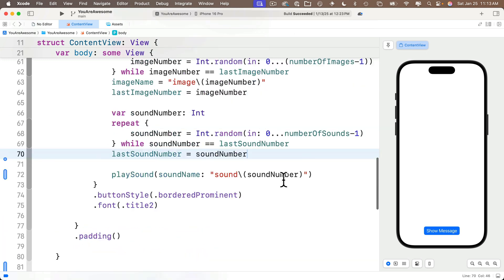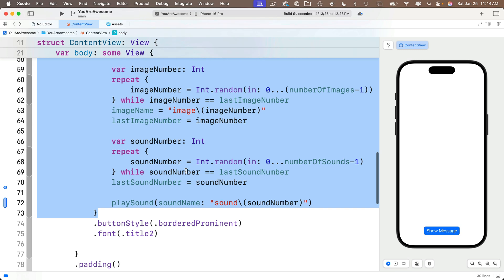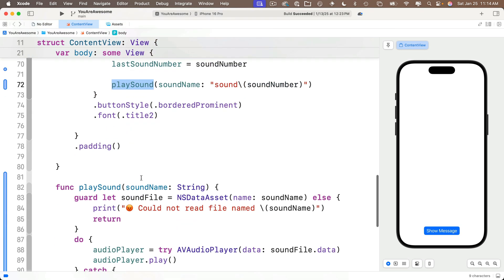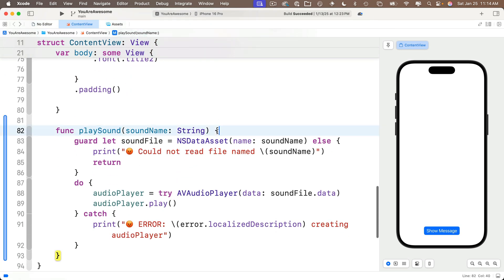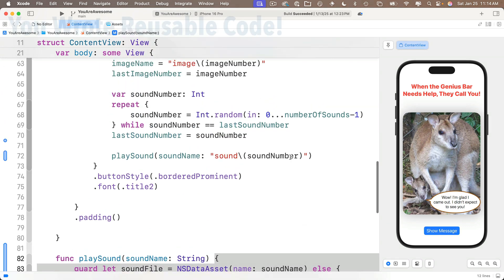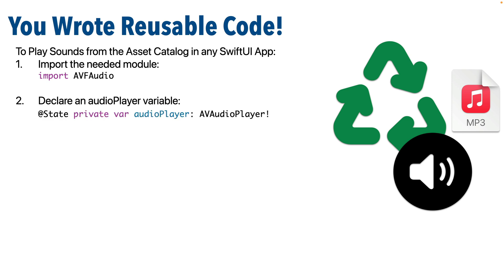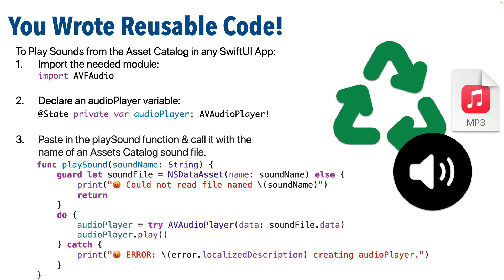Now every time we press the show message button, the code inside the button action executes, and when we get to this playSound call our code jumps down and executes that code. As long as you import AVFoundation and create an audio player property the way we showed, you should be able to copy the playSound function and paste it into any app where you want to play sounds stored in the assets catalog. We've got one more function to write, and that'll be a challenge.